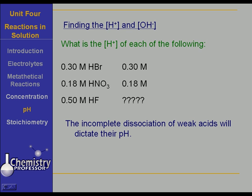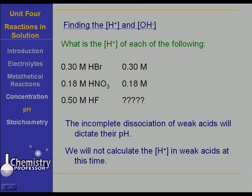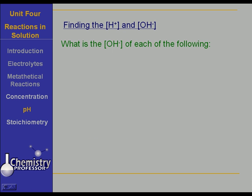The incomplete dissociation of weak acids is something that will dictate their pH, but that is something we will discuss at a later time. Now let's look at the hydroxide ion concentration for each of the following. If we have a 0.2 molar sodium hydroxide solution, and sodium hydroxide is a strong base, it dissociates 100%, giving us a hydroxide ion concentration of 0.2 molar.